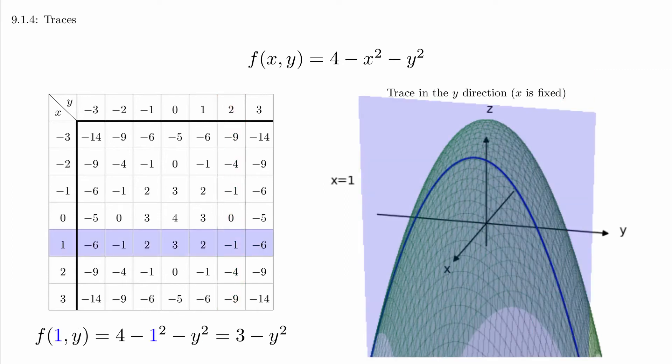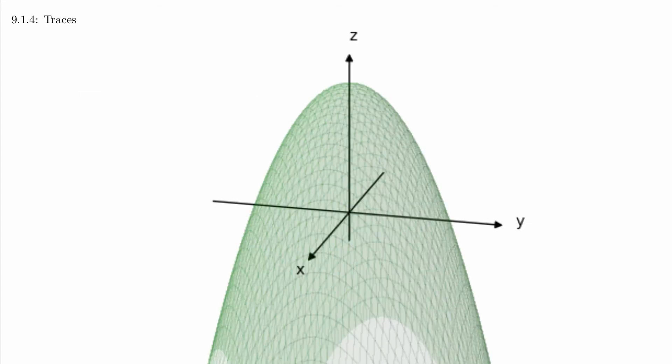In the same way, we can do a trace in the y-direction by fixing x to be equal to 1. This corresponds to a row of values on our chart. In fact, the graph itself is nothing more than a large collection of traces. You should practice mentally tracing the shapes of the parabolas going in both the x and y-directions. This is a skill that you can develop over time so that you can more easily visualize three-dimensional graphs.